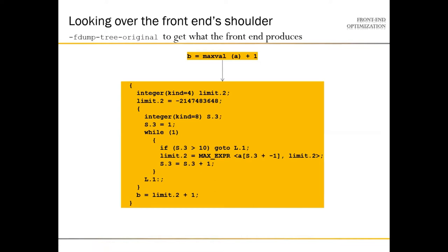The second option that is really interesting is dump-tree-original, because this is a relatively readable representation of what the front-end hands off to the middle end. Here, for example, we calculate the maximum value of an array and add one to it — you would initialize it, step through it, and assign the value. This particular function is actually inlined, as if you had written a loop.